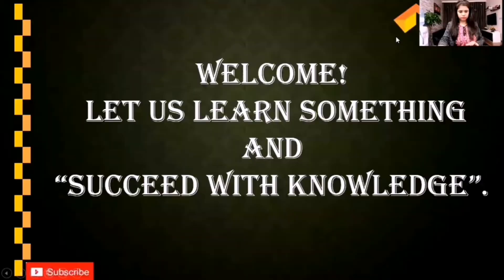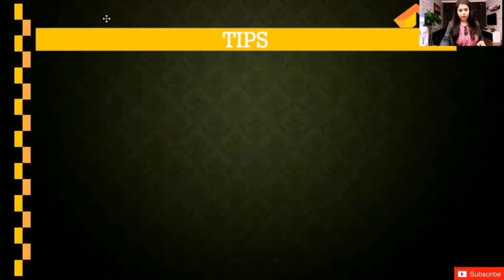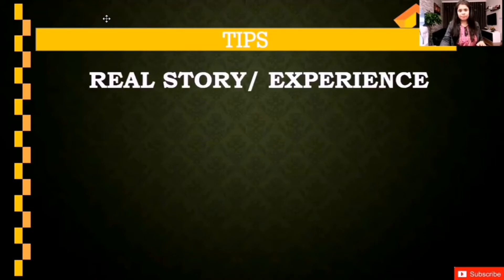First, we start with certain tips and then we will gradually move forward to understand the examples of weaknesses, strengths, and how we can use them in statement form. Here are a few tips to help us answer this question. First, instead of just specifying strengths in words or adjectives, you have to have a real-time story or experience ready to share for each strength you mention.